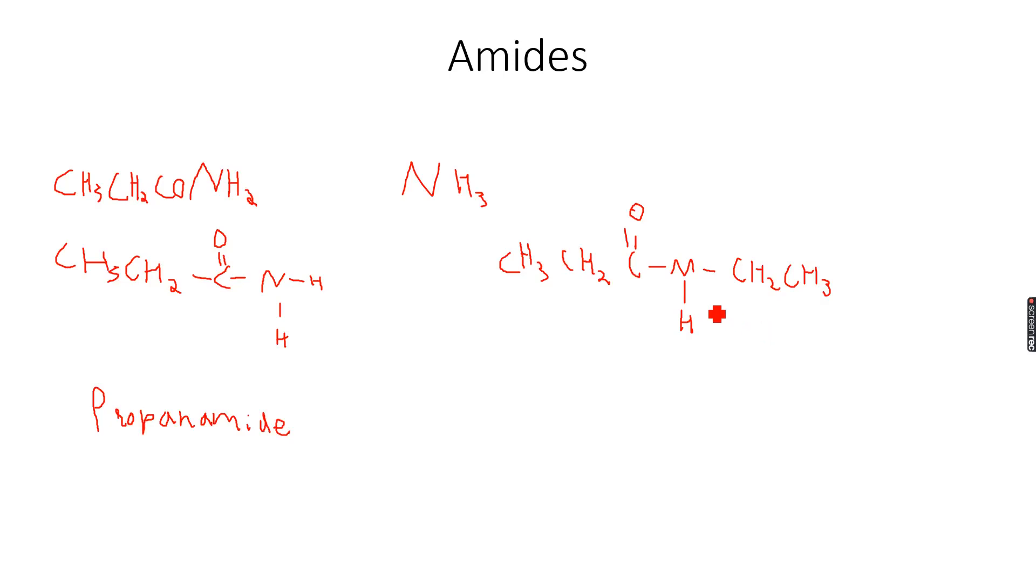This is called a disubstituted amide because two of the hydrogens have been replaced in ammonia - one is replaced by a CH3CH2CO group and the other is replaced by an ethyl group. When naming this, first we write N-ethyl because to the nitrogen atom we have attached an ethyl group.